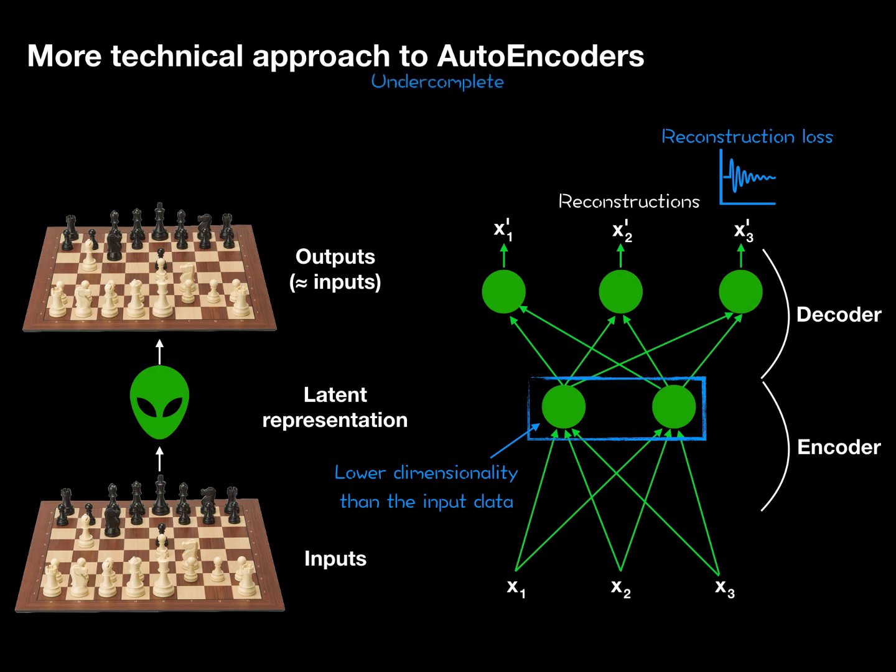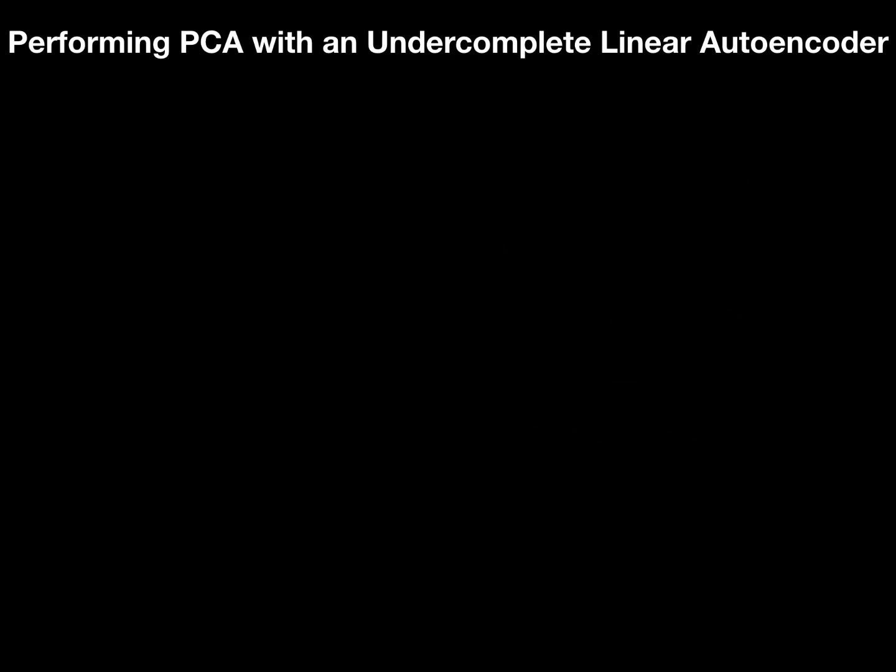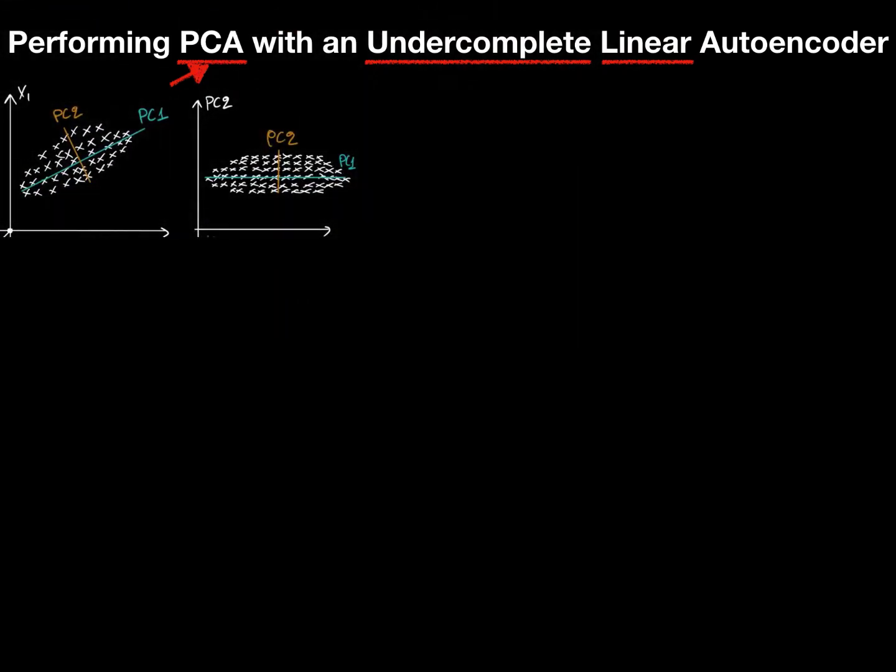Now we are ready to jump to an even more specific case: performing PCA with an under-complete linear autoencoder. Some keywords: PCA is principal component analysis. This is one of the most popular dimensionality reduction algorithms. For example, if we have a noisy data in the input, the output will be the more general representation of the data. Under-complete neural network has a lower dimensionality in hidden layers than inputs.